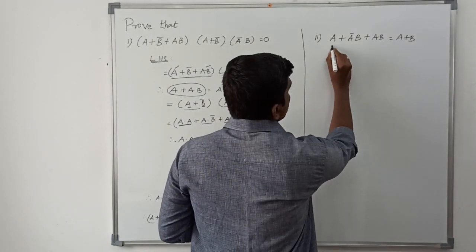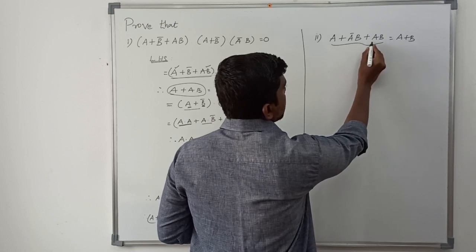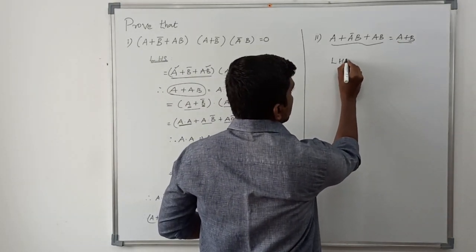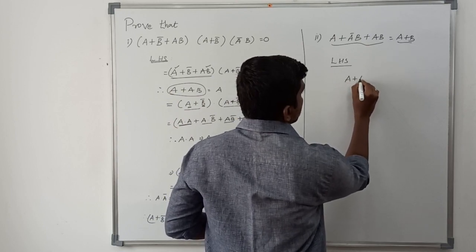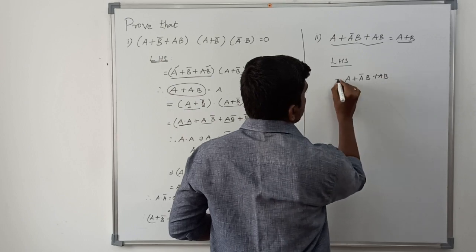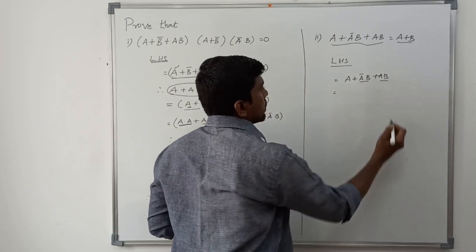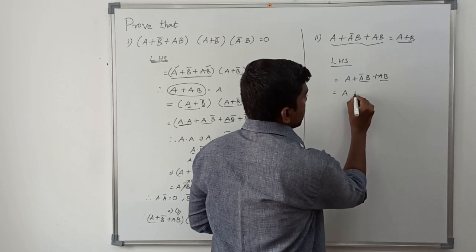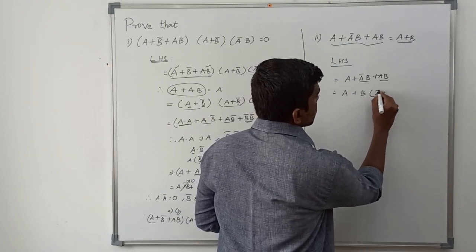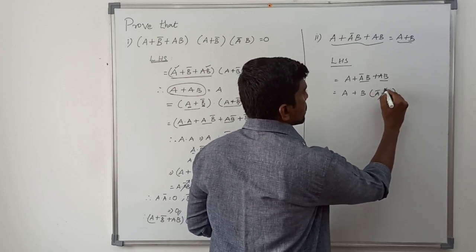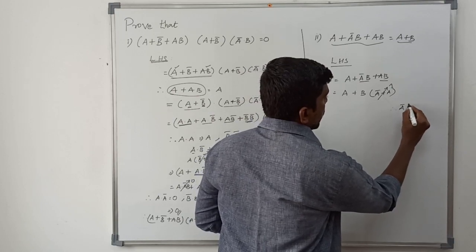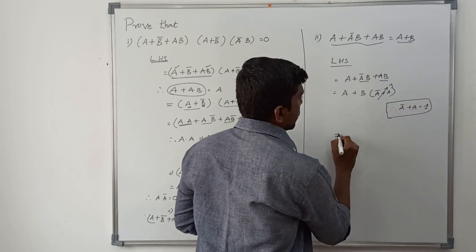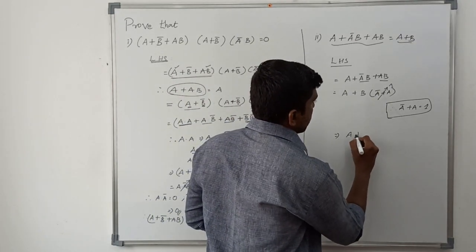Now for problem two: LHS = a + āb + ab, and RHS = a + b. I consider the two product terms āb and ab. The common variable between them is b. So I factor out b: a + b(ā + a). Now ā + a = 1, which was already proved. So the expression becomes a + b·1, which gives a + b.